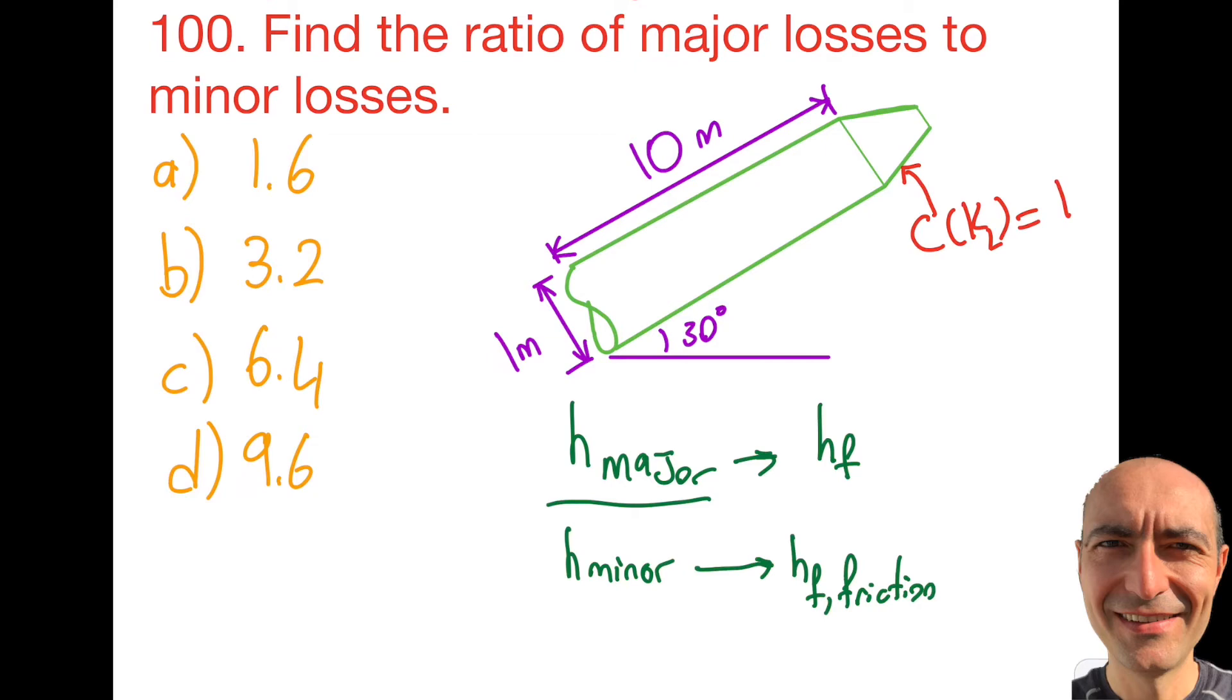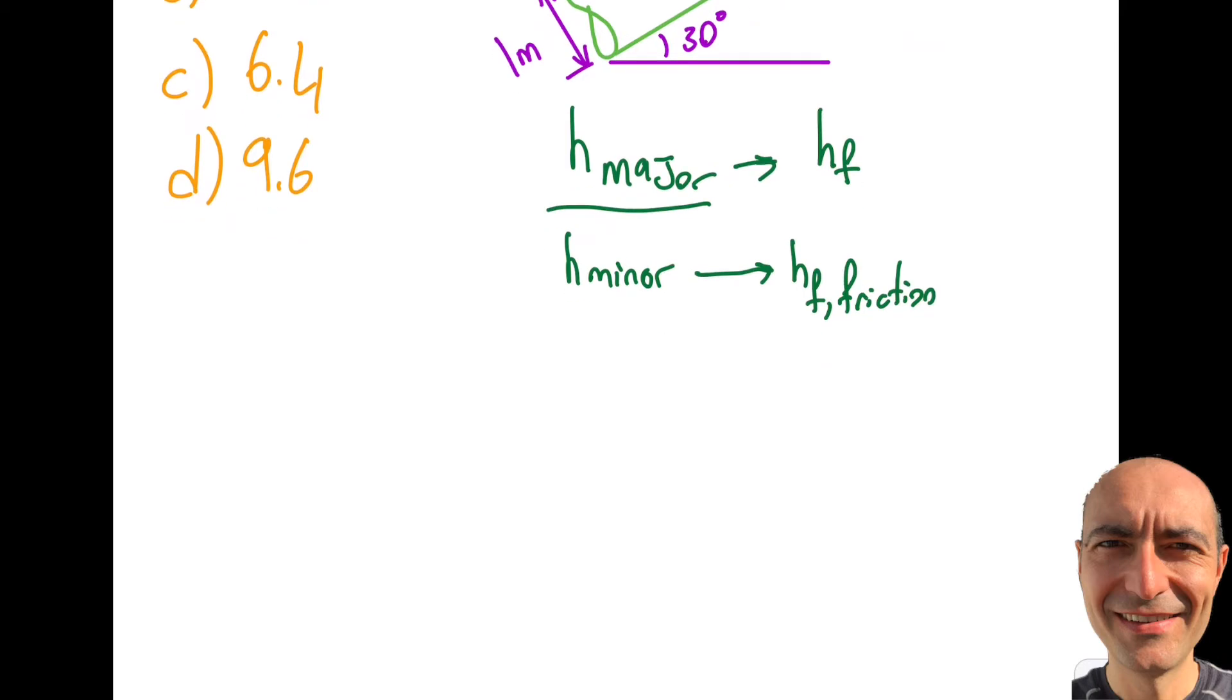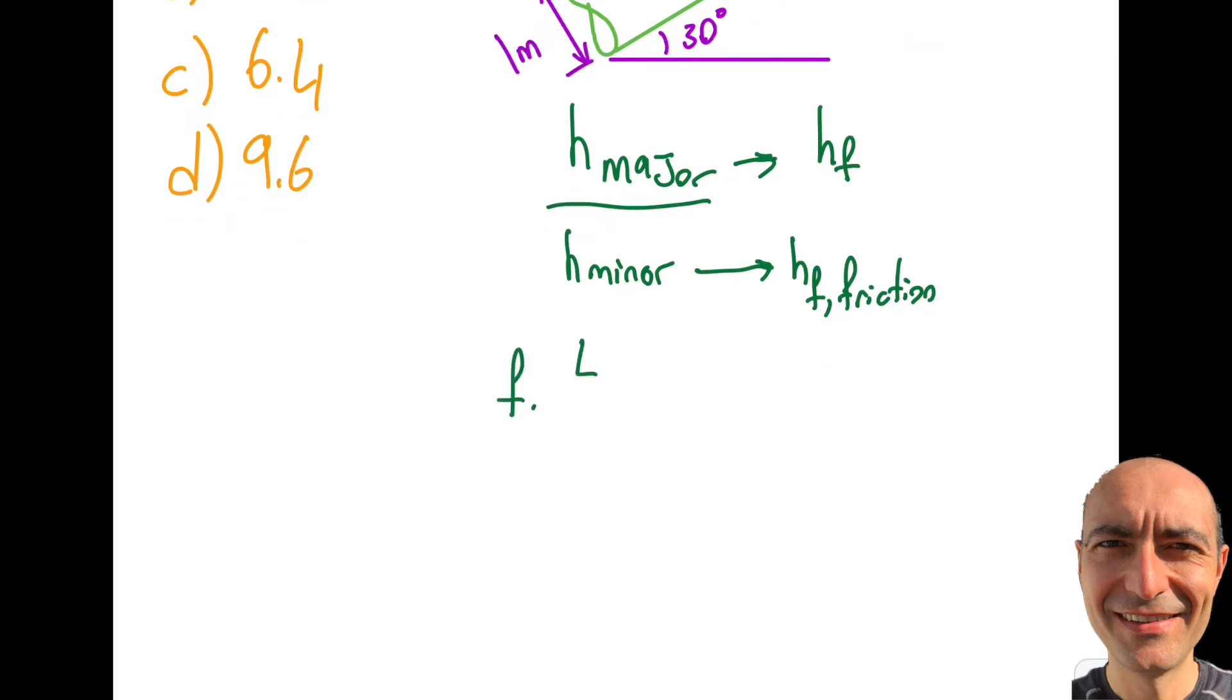But I have additional videos that you can watch from the sections that I can make it longer. So I look at my reference manual and let's take a look at it. It says F L over D V squared over 2G will be my major loss.